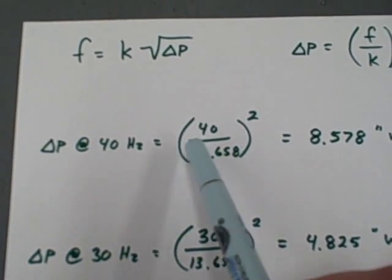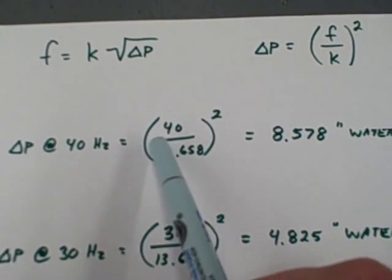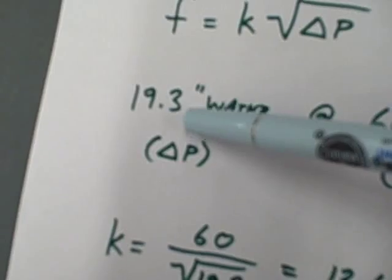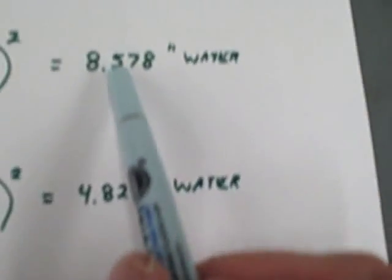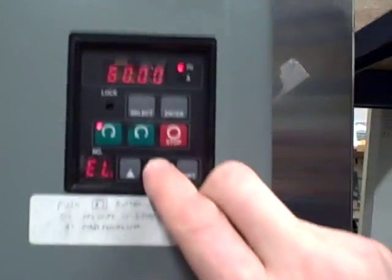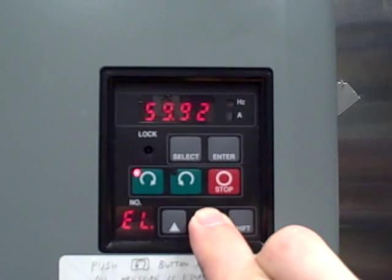So here I've calculated what the differential pressure ought to be at a frequency of 40 hertz instead of 60 hertz. We expect the pressure to go from previous value of 19.3 inches of water down to about 8.578 inches of water. So we'll come over here and we'll decrease the motor frequency from 60 hertz down to 40 hertz.